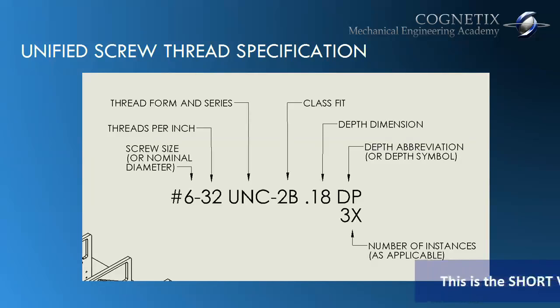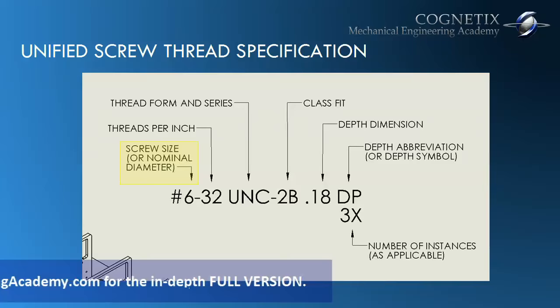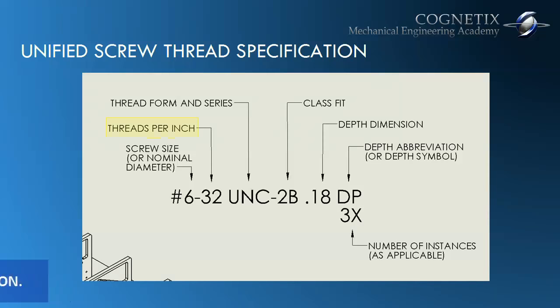So let's get into how to specify a threaded feature per the Unified Screw Thread Standard. We see the format of the call-out here on the screen. Let's go from left to right. First you see the screw size or nominal diameter, followed by a dash, then threads per inch, followed by the thread form and series, dash, class fit, another space, and then we have the depth dimension and the depth abbreviation or depth symbol.